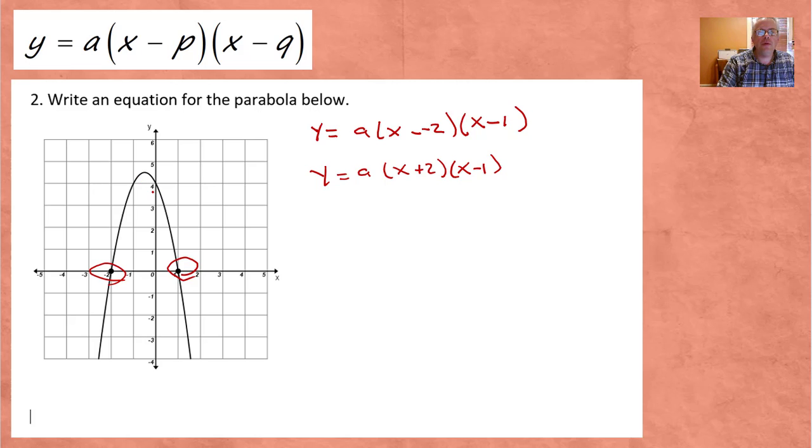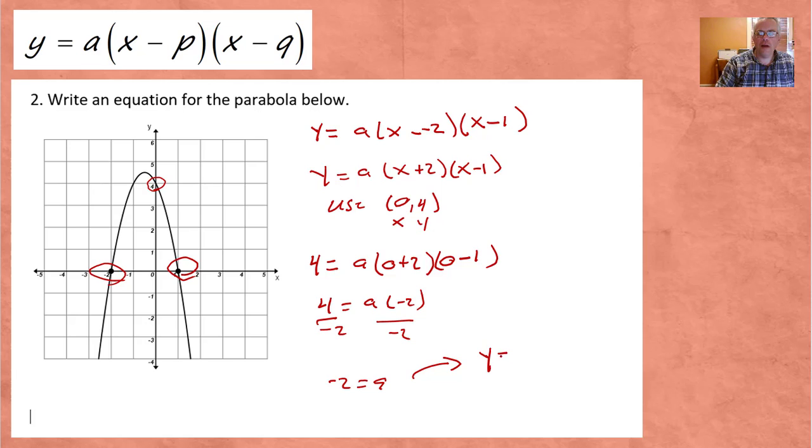We don't know the vertex this time, but we do know this point. We know the Y intercept, 0, 4. So we're going to use 0, 4. So 0 is going to go in for X, 4 for Y. Let's see what we get. We get 4 equals A, 0 plus 2, 0 minus 1. So 4 equals A times, this would be 2 times negative 1, which is negative 2. So times negative 2. Divide both sides by negative 2, and we have negative 2 equals A. So put it into the equation. We have Y equals negative 2, that's equal to A, times X plus 2 times X minus 1.